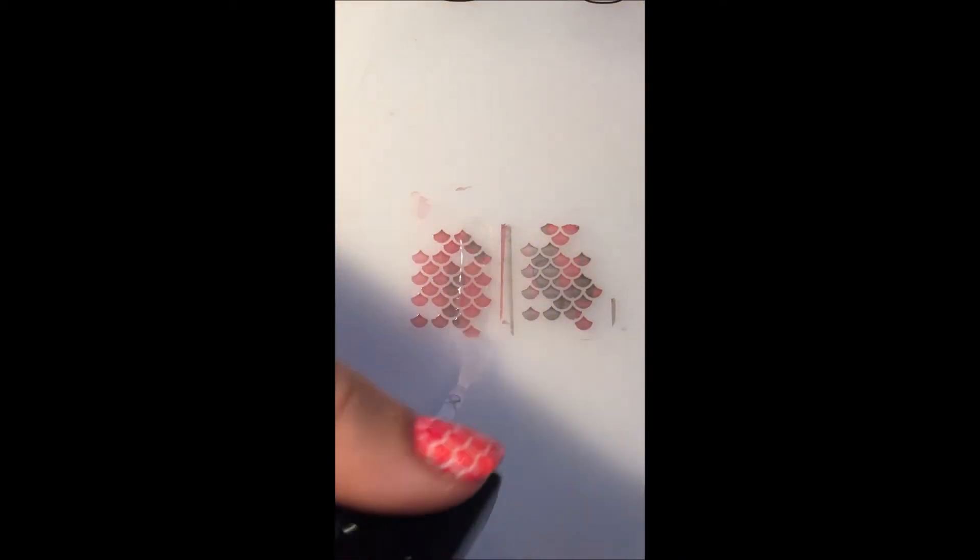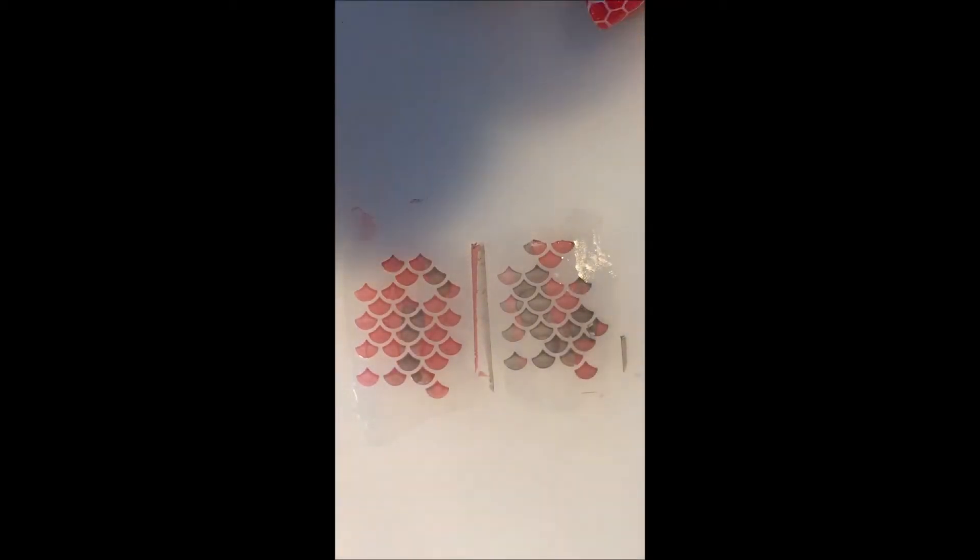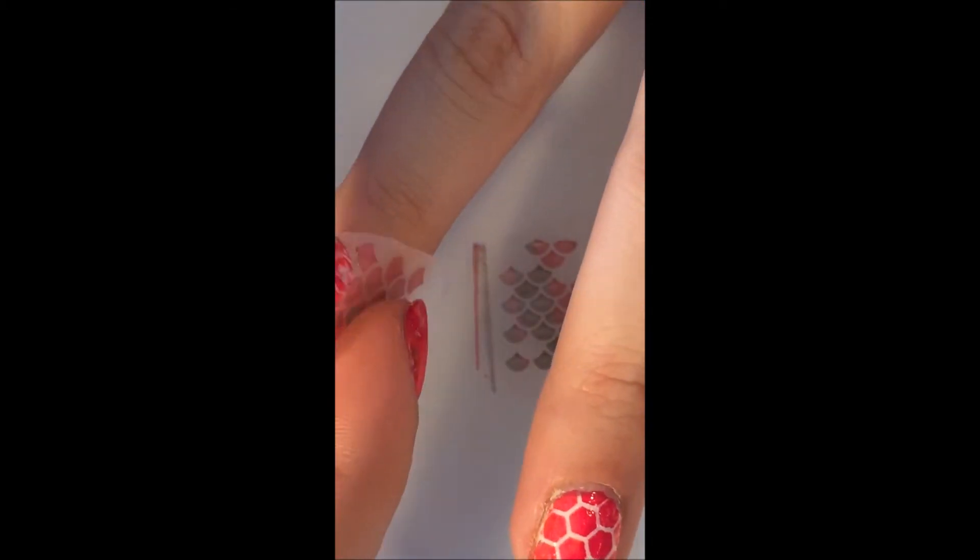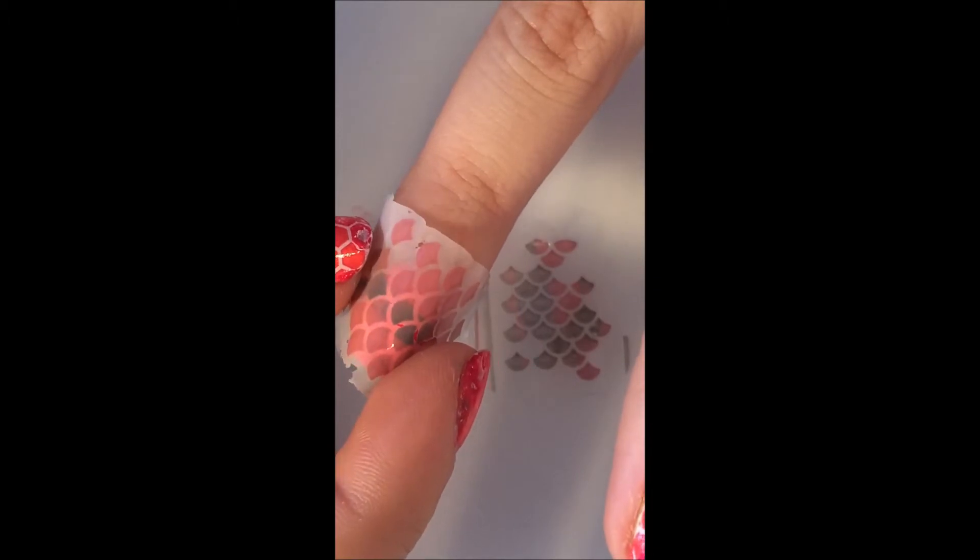When those are done drying, you want to put a top coat or a quick dry top coat, whatever is your favorite, on top and let that dry for a while. You do the same thing with this one. Use your cuticle pusher, go around the sides first to make sure it really is dry. You can use your fingers or tweezers to pick it up like that. And there it is. Same thing—you would place that on your nail however you want.